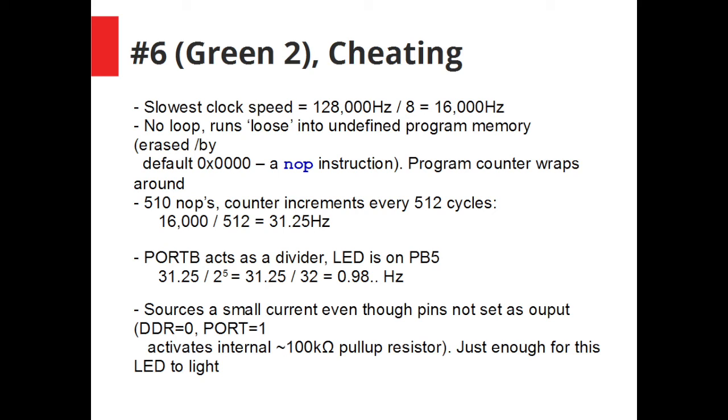Now the reason this works is we've used the slowest clock speed which is 128 kHz on the internal oscillator. We divide that by 8 using one of the fuse settings. And then port B kind of acts as a divider. So here if we put the LED on PB5 which is the highest bit on the AT13 it divides it by a further 2 to the power of 5 by 32 to give us an oscillation rate of around 1 Hz.